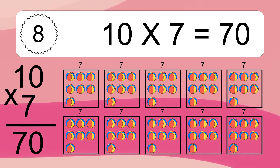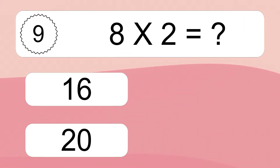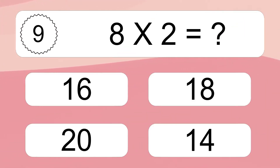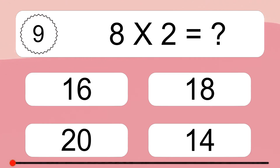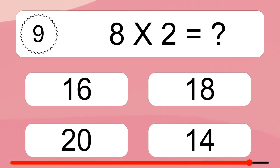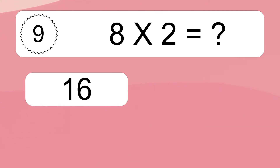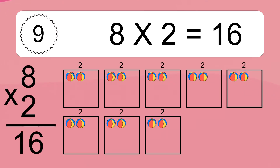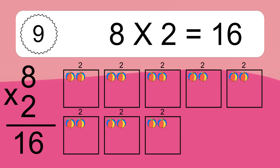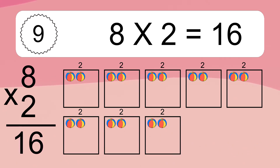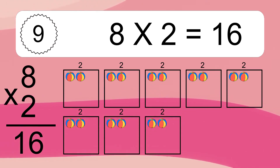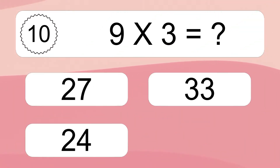This equals seventy balls. Eight times two equals what? Eight times two equals sixteen. We have eight boxes, and each box has two colorful balls inside. If you count all the balls in all the boxes together, you will have eight times two balls. This equals sixteen balls.